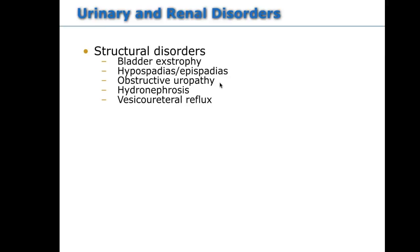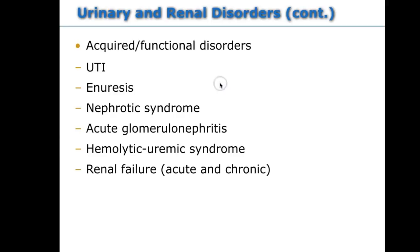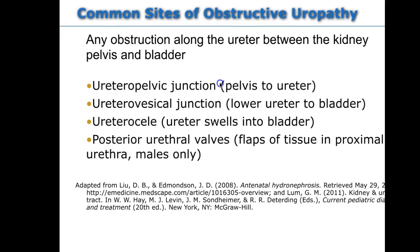UTIs, enuresis — which is bedwetting or loss of bladder control — nephrotic syndrome, and acute glomerulonephritis, which can occur after a strep infection, are covered. Hemolytic uremic syndrome can be caused by E. coli bacteria and is quite serious. Acute renal failure can be caused by septic shock or severe dehydration and is usually reversible, or it can progress into chronic renal failure.